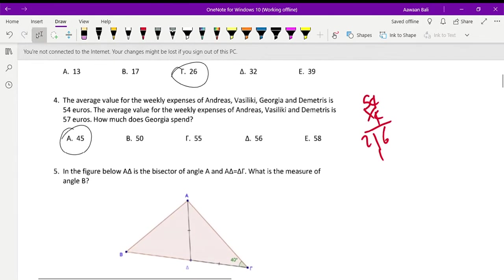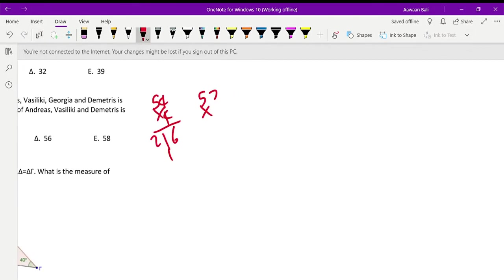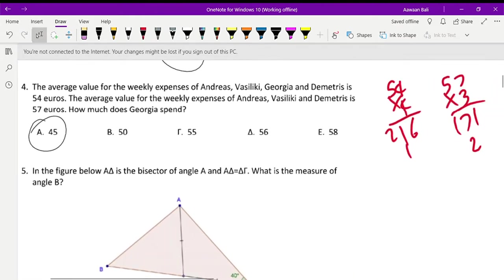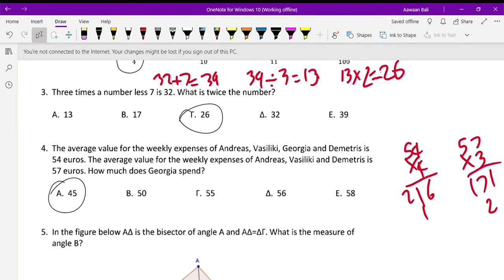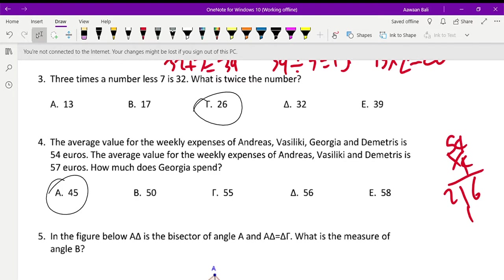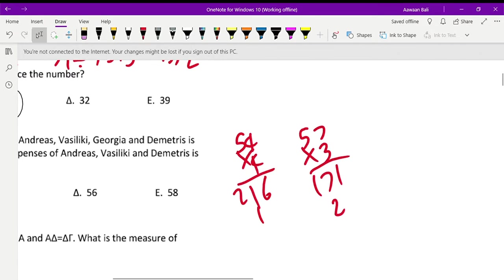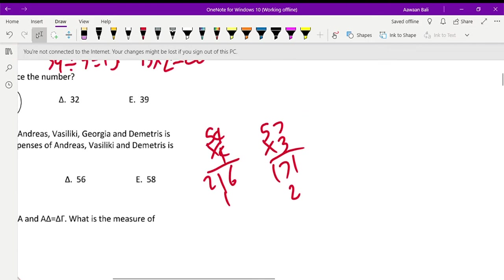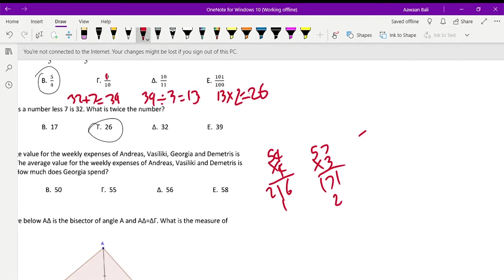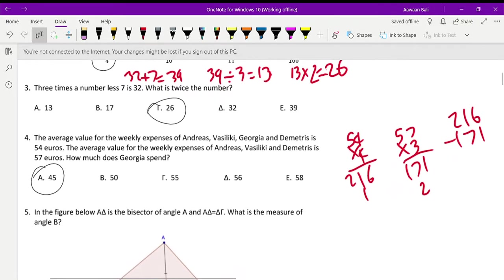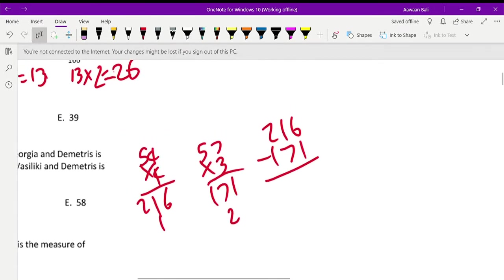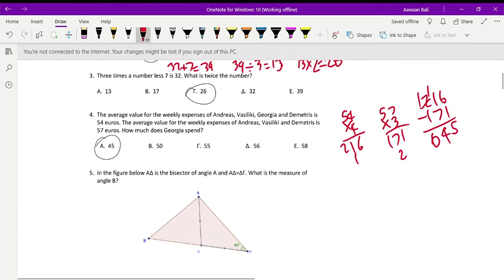Then we have 3 people with the average of 57 euros. The reason why we're multiplying by the number of people is because the average is normally the sum of money they have divided by the number of people. So here we're doing the inverse. We multiply the average by the number of people to find the sum of money they have. And then we would minus them, because on the second one we don't have Georgia. So if we minus them together, we can find out how much money Georgia has, which is 45 euros. Therefore the answer is alpha, 45.